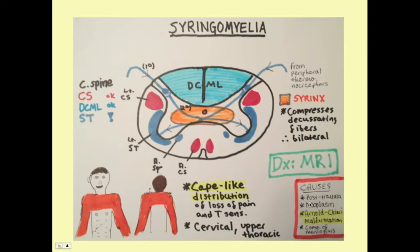Causes of syringomyelia include post-trauma, where spinal injury causes inflammation affecting the central canal; neoplasm causing obstruction; and meningitis as a long-term complication. Most commonly, it is a complication of Arnold-Chiari malformation. To diagnose syringomyelia, the initial and best diagnostic test is an MRI, because there's really no other way to visualize into the spinal cord.